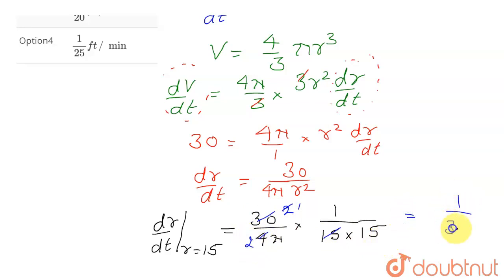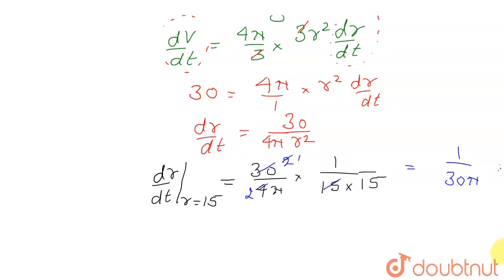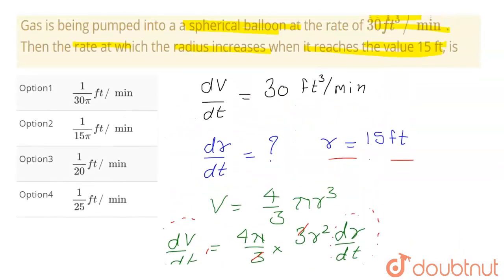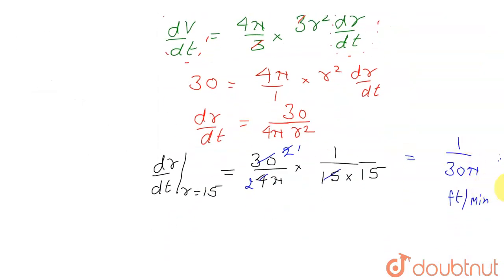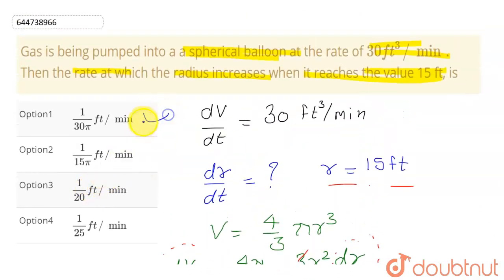The answer is 1/(30π) feet per minute. Looking at the options, option one is correct. When the volume is increasing at a rate of 30 cubic feet per minute and the radius reaches 15 feet, the rate at which the radius is increasing is 1/(30π) feet per minute. That is the solution to this question.